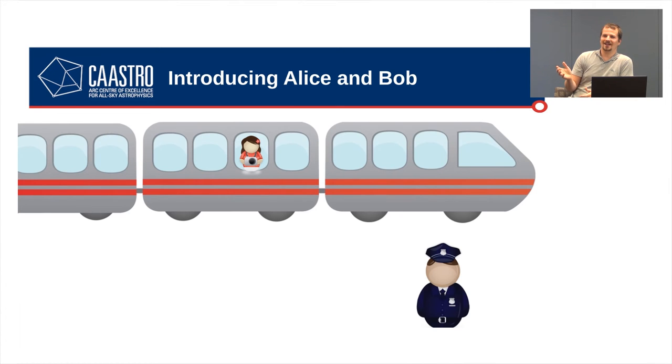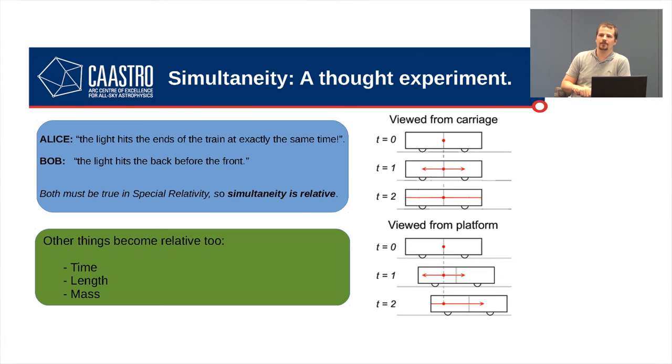Einstein usually talked about these things in terms of thought experiments. And we're going to do the same. I'm going to introduce to you a very, very fast train. And Alice on the train who's carrying some pretty neat laser equipment. And Bob who's standing on the platform watching. We expect that if two things happen at the same time at different places according to one person, then according to a different person those two things also happen at the same time. That's sort of the simultaneity. However, special relativity actually does away with this. And we can see this by the following example.